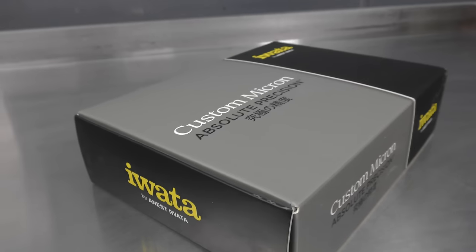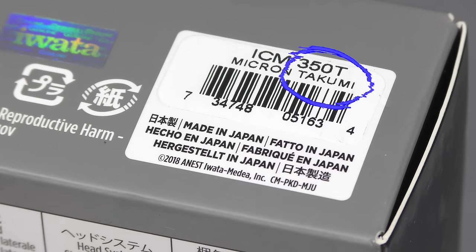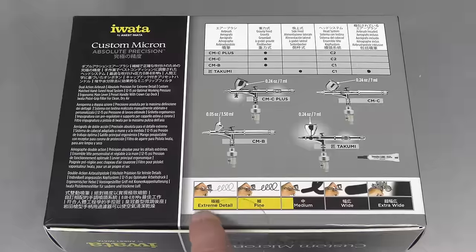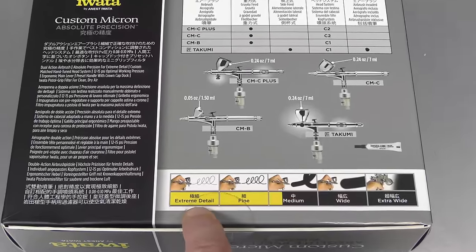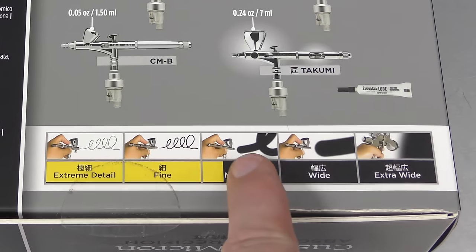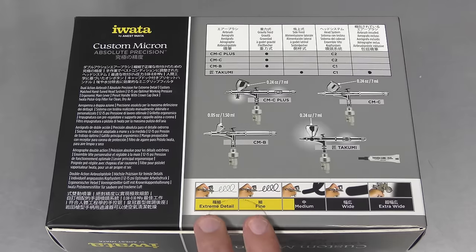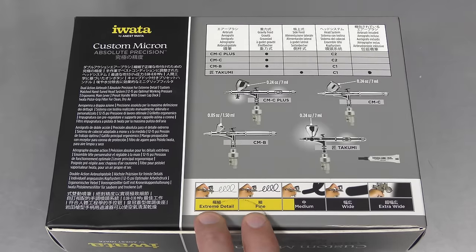In this video I'm going to be unboxing the Iwata Micron Takumi, spelled T-A-K-U-M-I. You can see with the chart here that this one sits within the extreme detail and fine range, going slightly into the medium, but I would definitely be using any of these Microns for fine and extreme detail.